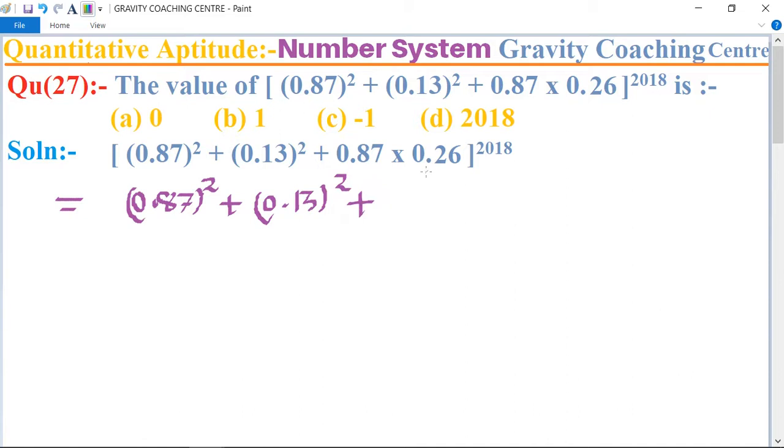Plus, we can write 0.26 as 2 multiply 0.87 multiply 0.13, because 13 to 0.26, and bracket.